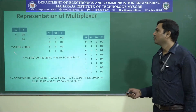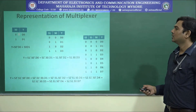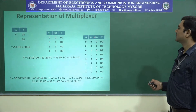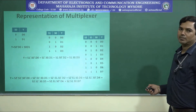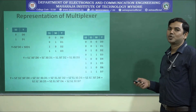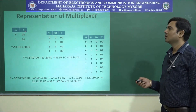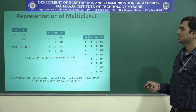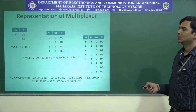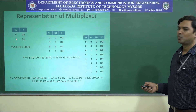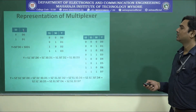These are the functional tables describing a 2-to-1 multiplexer, a 4-to-1 multiplexer, and an 8-to-1 multiplexer. For the 2-to-1 multiplexer, there is only one select line, so 2 to the power 1 means 2 inputs, 1 output, and 1 select line. If the select line is 0, D0 will be linked to Y. If the select line is 1, D1 will be linked to Y.